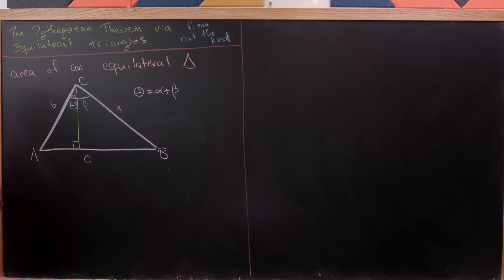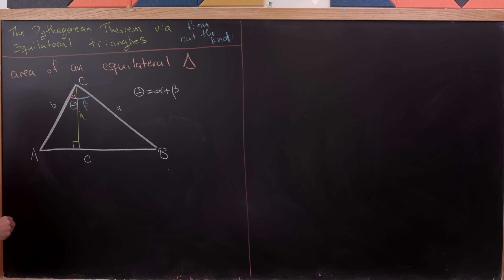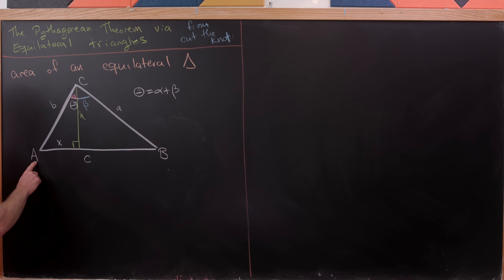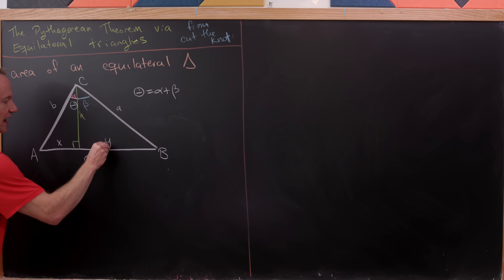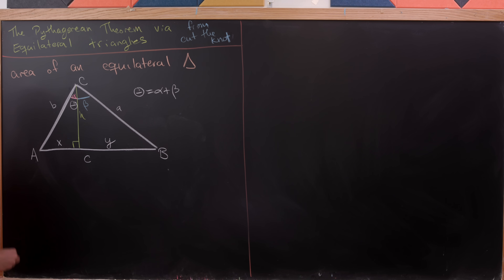Next, I'm going to give the name h for the altitude, or the length of the altitude — that's fairly standard. And then I'm going to say that line segment AC has length x, and line segment CB has length y.